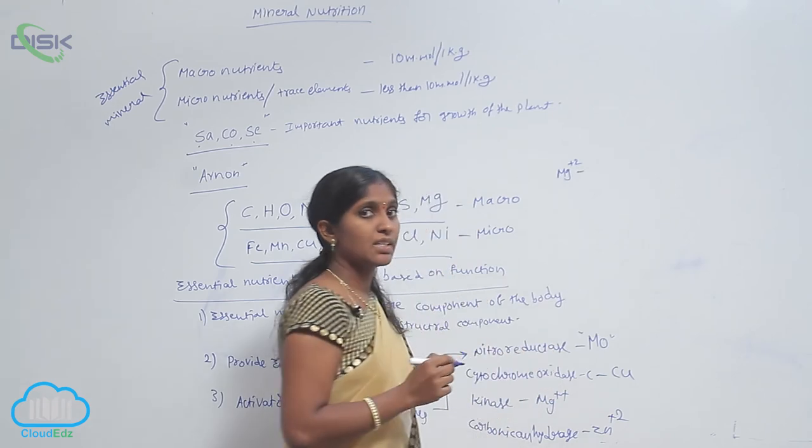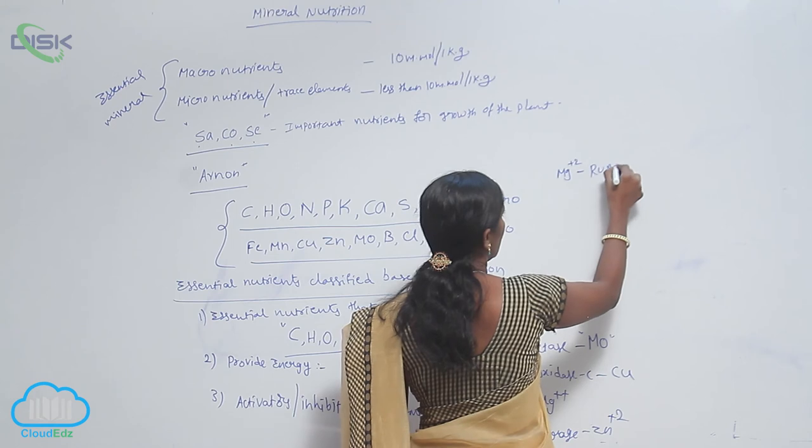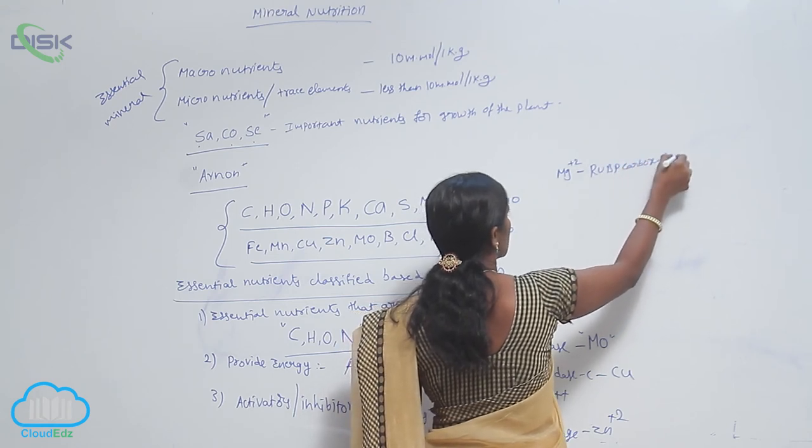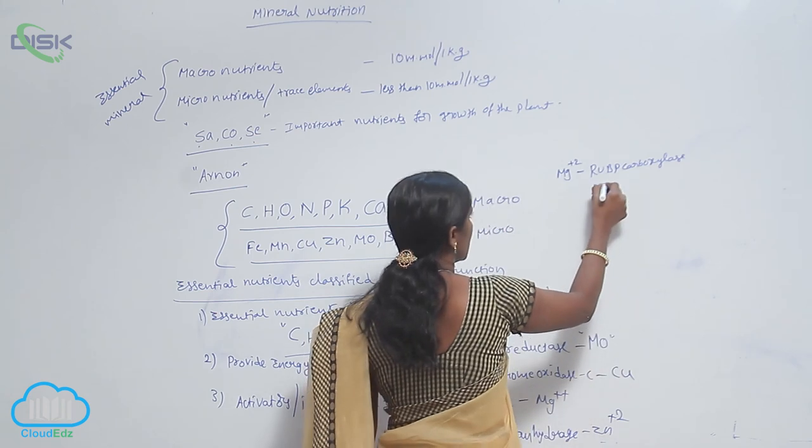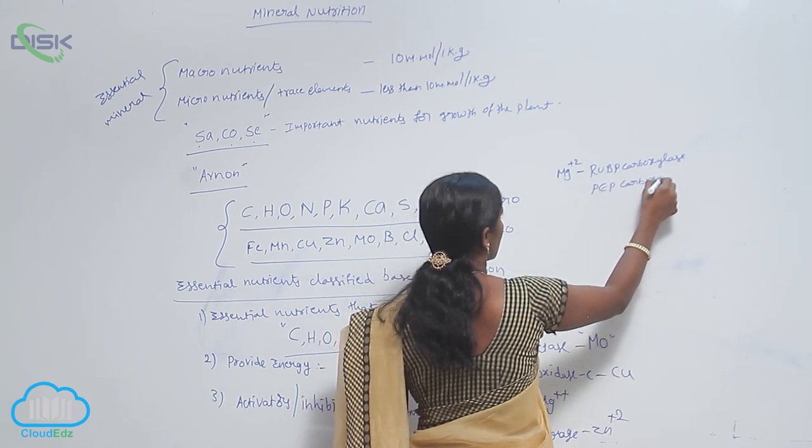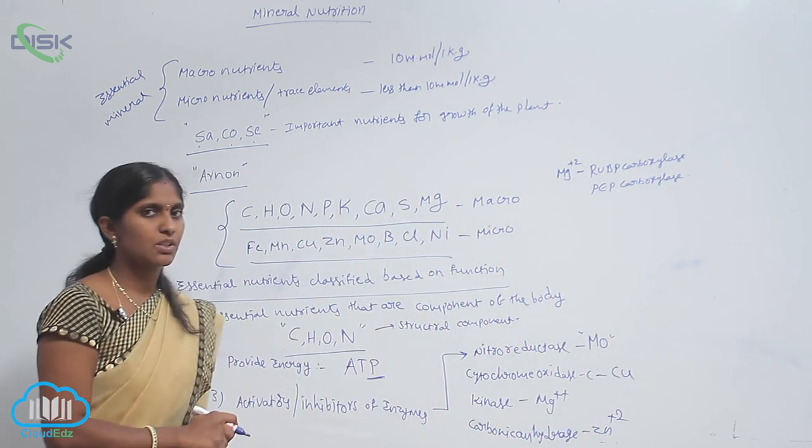Mg2+ also works as an activator for RuBP carboxylase as well as PEP carboxylase.